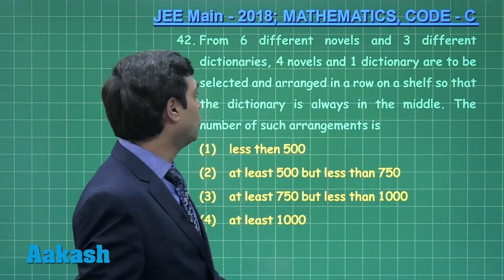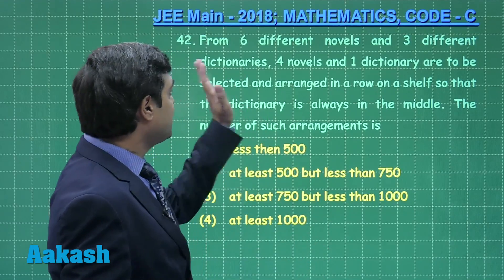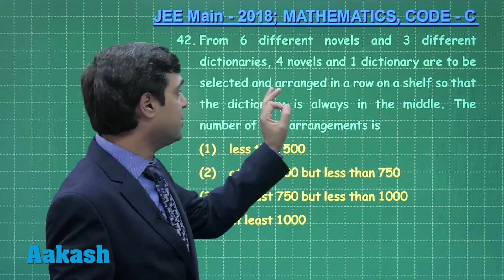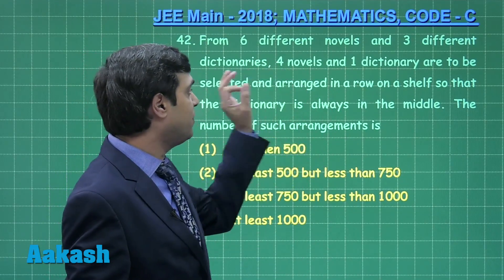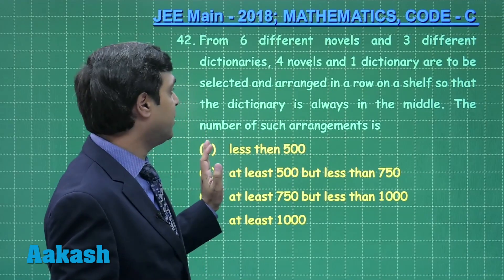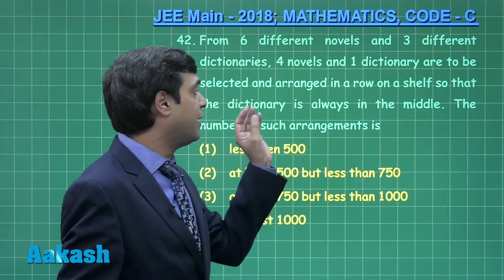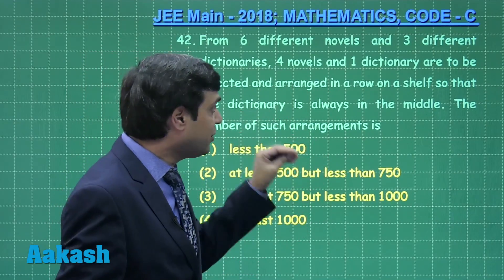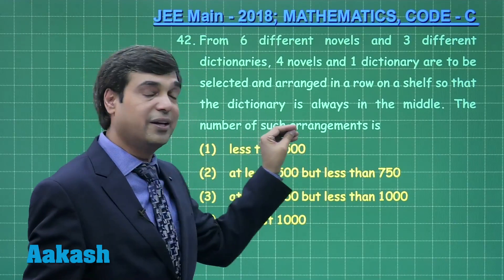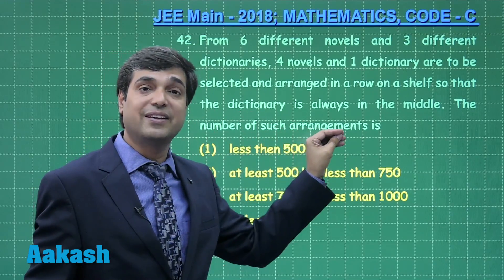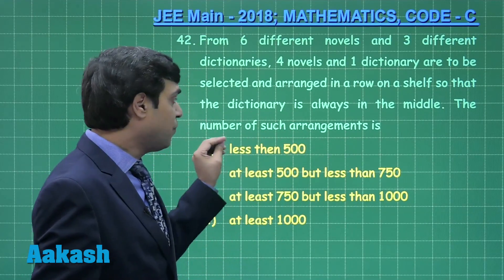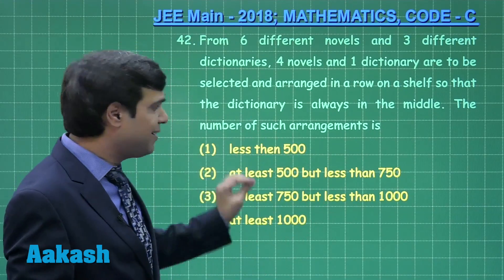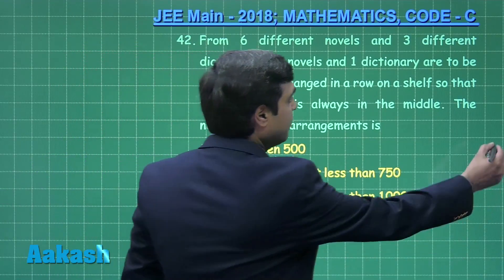Let us consider question number 42. From 6 different novels and 3 different dictionaries, 4 novels and 1 dictionary are to be selected and arranged in a row on a shelf so that the dictionary is always in the middle. This is a straightforward question from permutations and combinations.